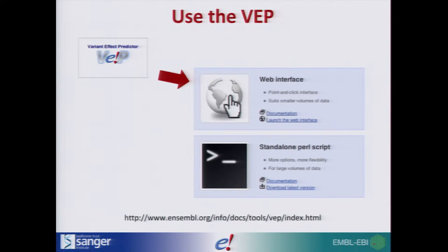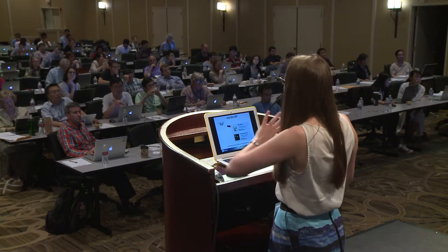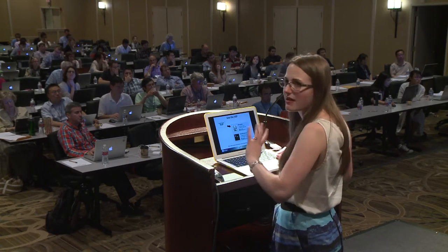The way you can find all this information is using the VEP — the Variant Effect Predictor. There's a web interface which I'm going to show you, and also a standalone Perl script. The web interface is all pointing and clicking. The Perl script doesn't require any coding — it's simply a script you run, with extensive documentation telling you exactly what commands to put into your command line.